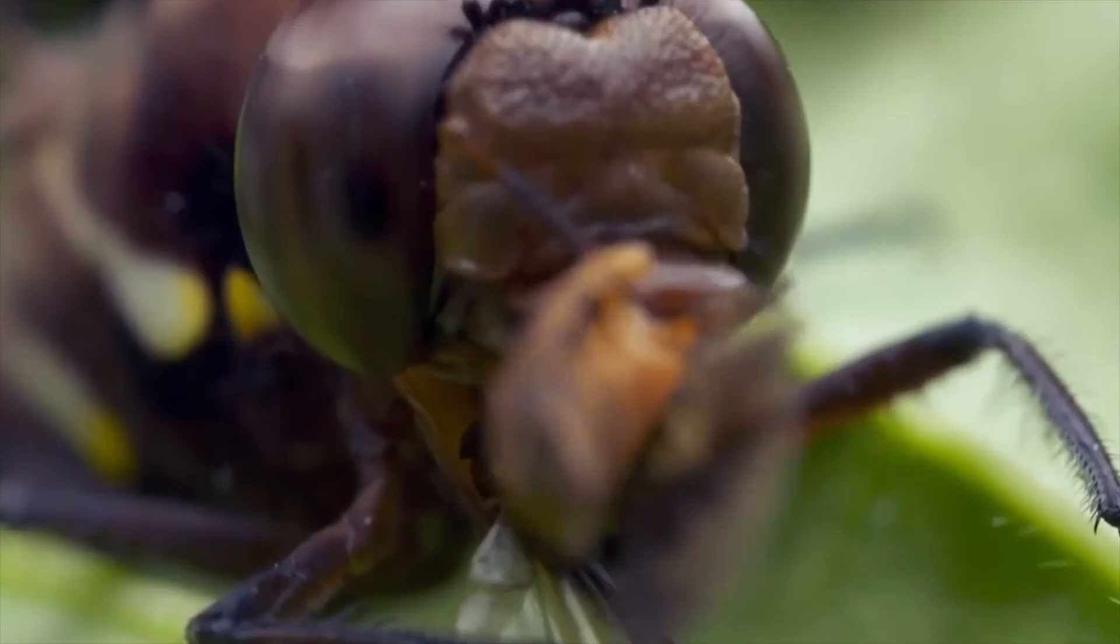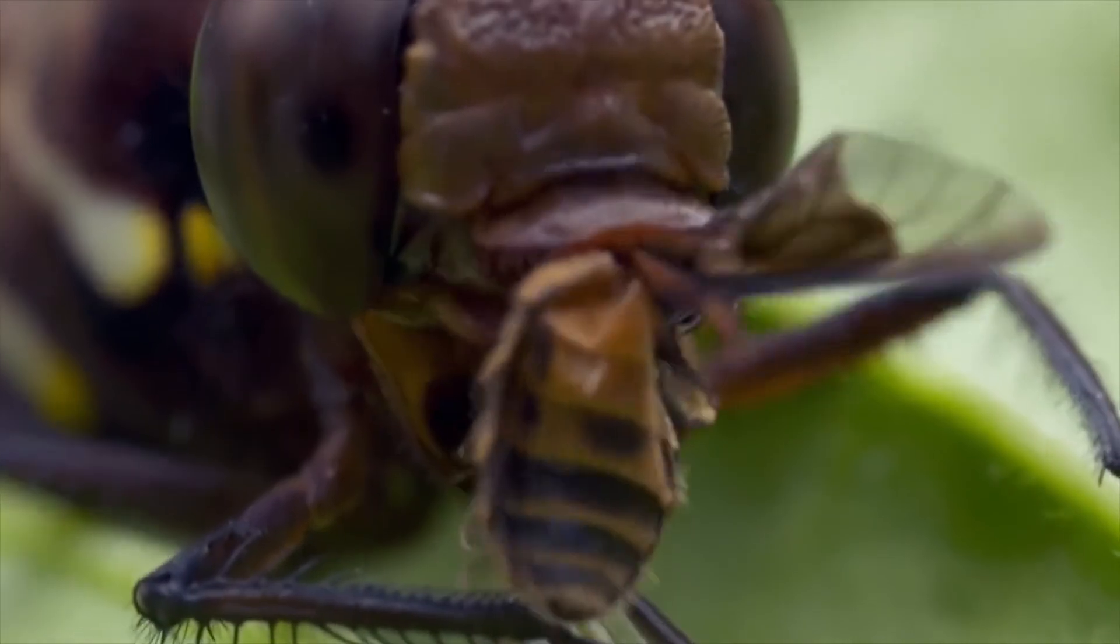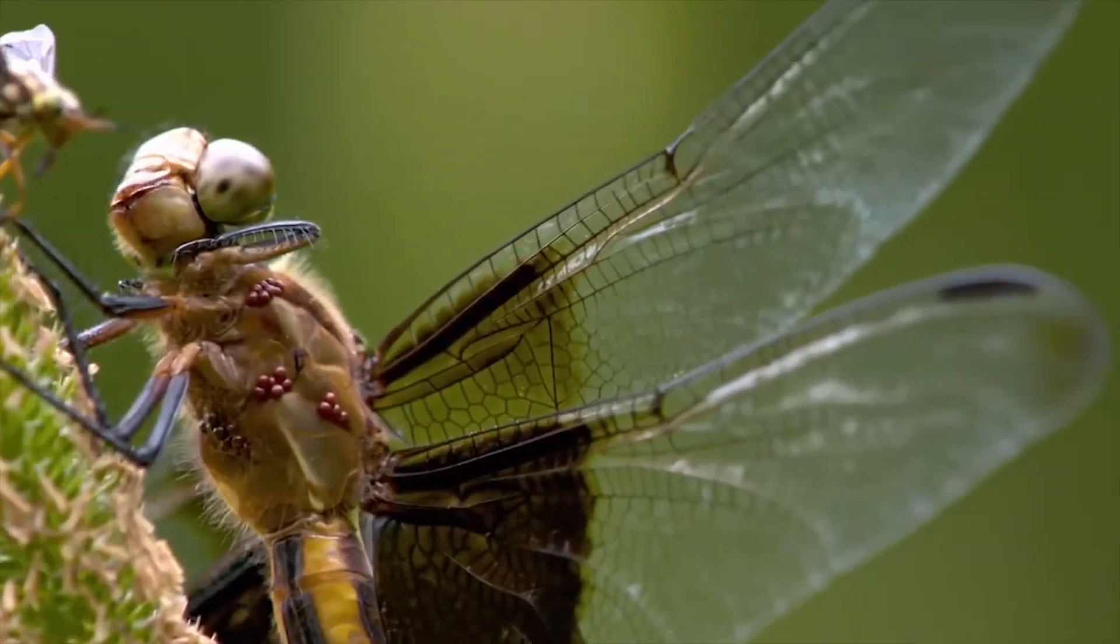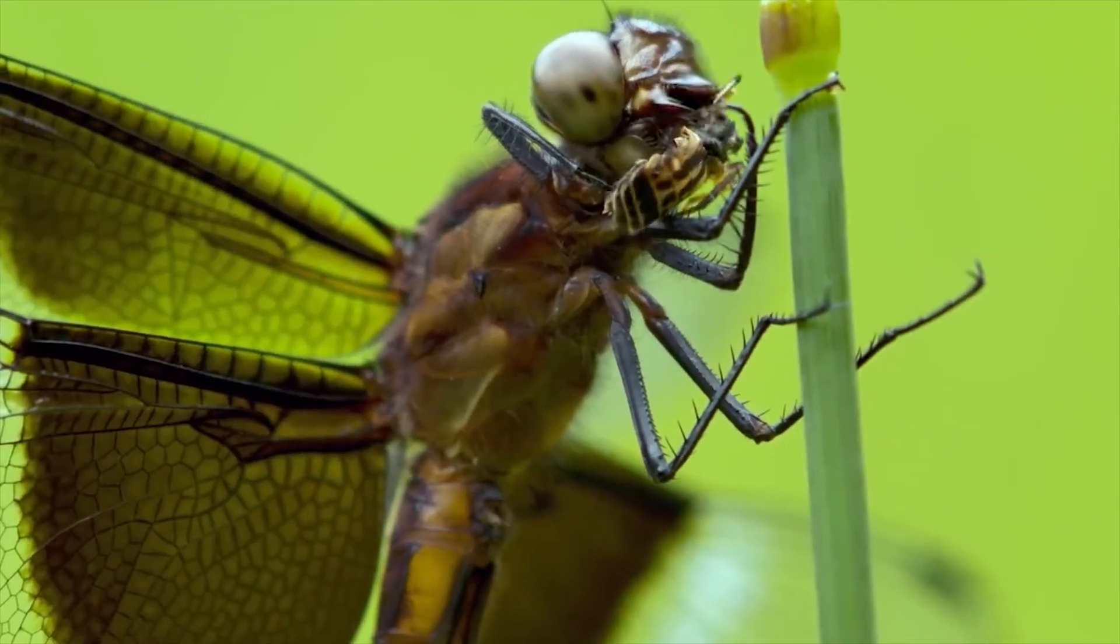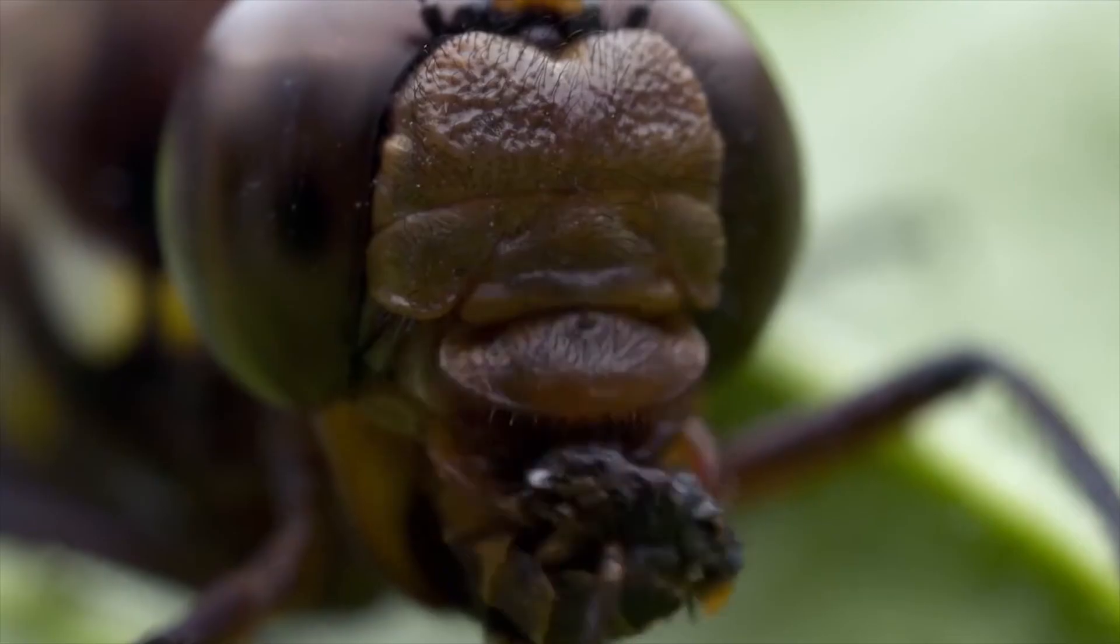Over 500 species of these grizzly undertakers live worldwide, devouring dead flesh until nothing but bone remains. Without them, there would be fewer custodians around to clean up the mess.